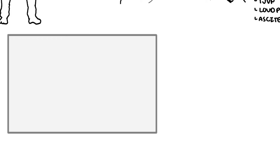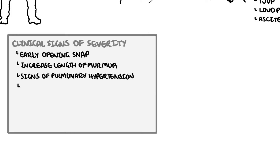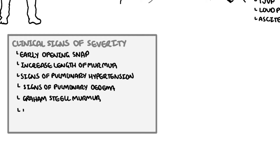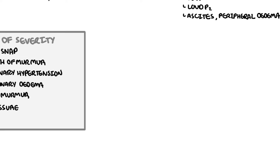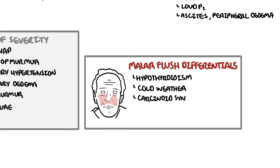Clinical markers of severe mitral stenosis include an earlier opening snap, increasing length of the murmur, signs of pulmonary hypertension and pulmonary edema, Graham Steell murmur (a sign of pulmonary regurgitation), and low pulse pressure. When someone presents with malar flush, consider differential diagnoses including hypothyroidism, cold weather causing facial vasodilation, carcinoid syndrome, systemic lupus erythematosus causing the butterfly rash, and polycythemia.